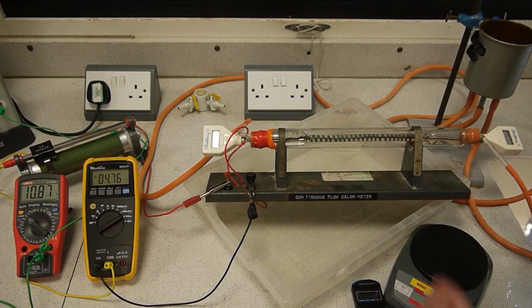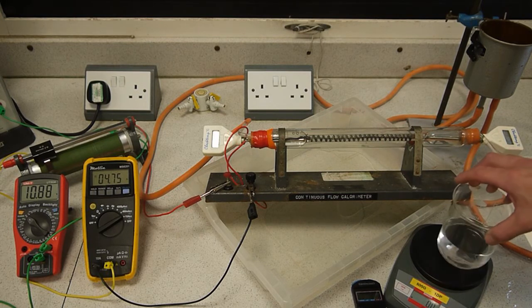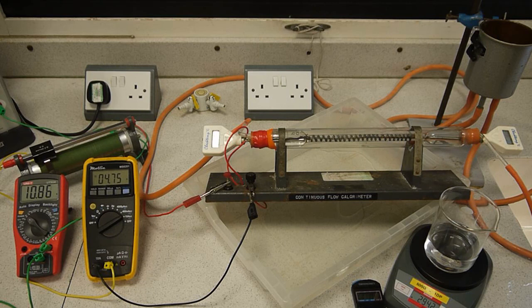Well that is 294.3 grams, so that is nearly 100 grams or 90 grams or so less than the last run. Okay, so from that we can now use our values for current and voltage, which we can see there on the screen, and we'll start to be able to process this data to see if we can get a value for the specific heat capacity of water.